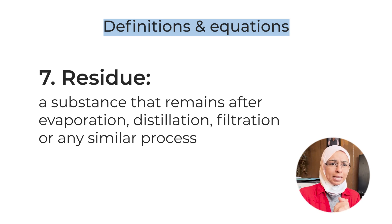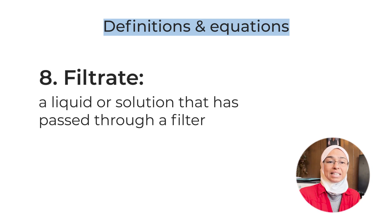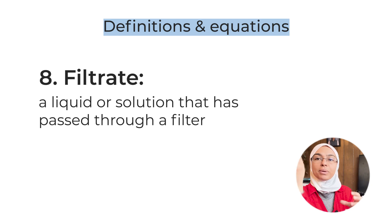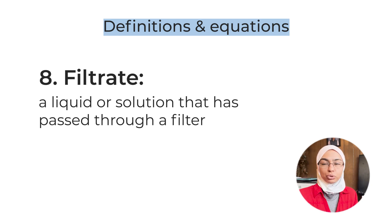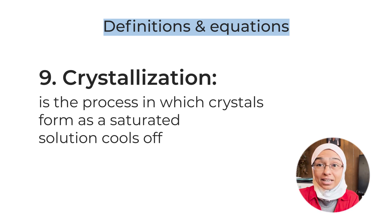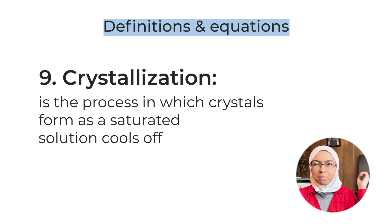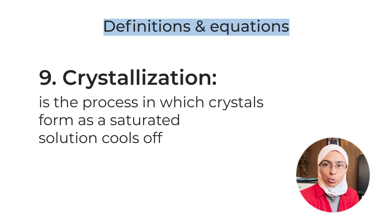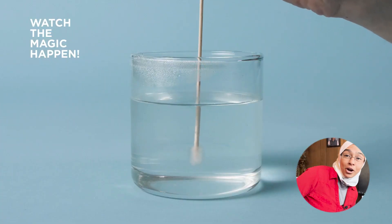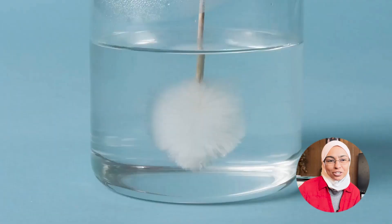Definition number eight: filtrate — the liquid that passes through the filter. Also not very common as a direct question; they usually ask you to label or identify the filtrate, which is the soluble substance that passes through the filter paper. Number nine: crystallization — the process in which crystals form as you cool a saturated solution. For example, hot water that dissolved the maximum amount of sugar will crystallize sugar as it cools. Try it at home!